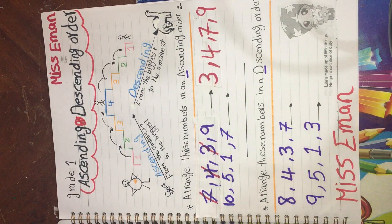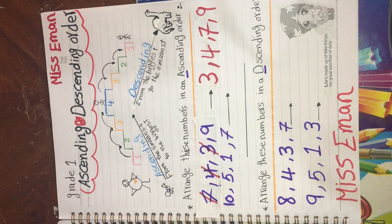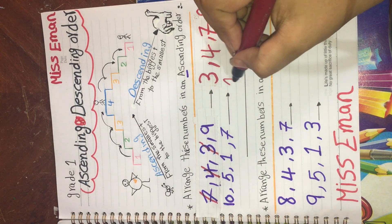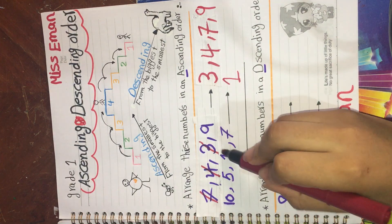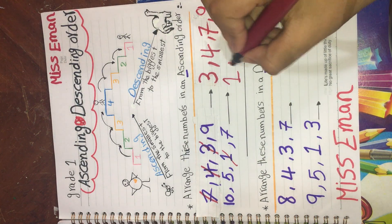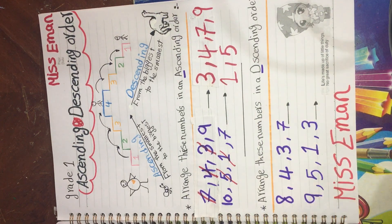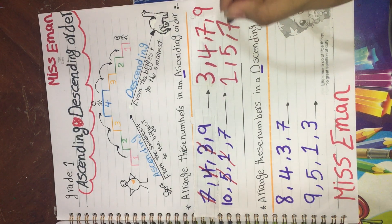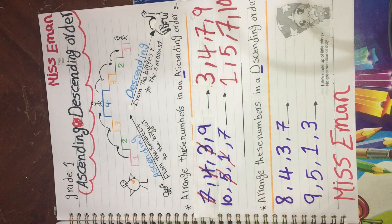Now I have ten, five, one, and seven. Where is the smallest number? Yes, it's one. So we write one and cancel it. Now from ten, five, and seven — the smallest is five. We cancel it. Now from ten and seven — the smallest is seven. So the ascending order is: one, five, seven, ten.